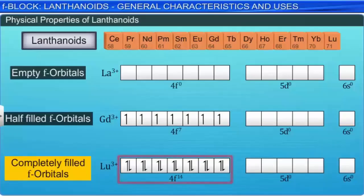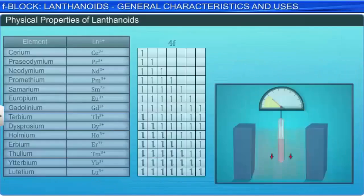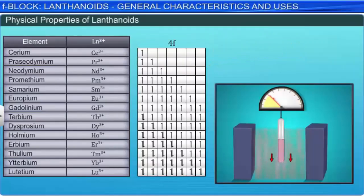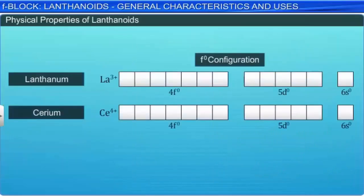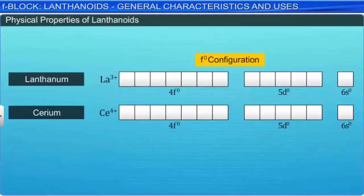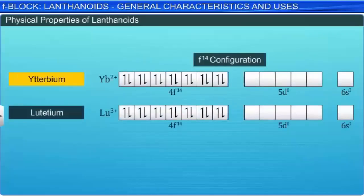All lanthanoid ions show paramagnetic behavior, with the exceptions of trivalent lanthanum and tetravalent cerium with F0 configuration. Paramagnetism is the maximum in dysprosium.